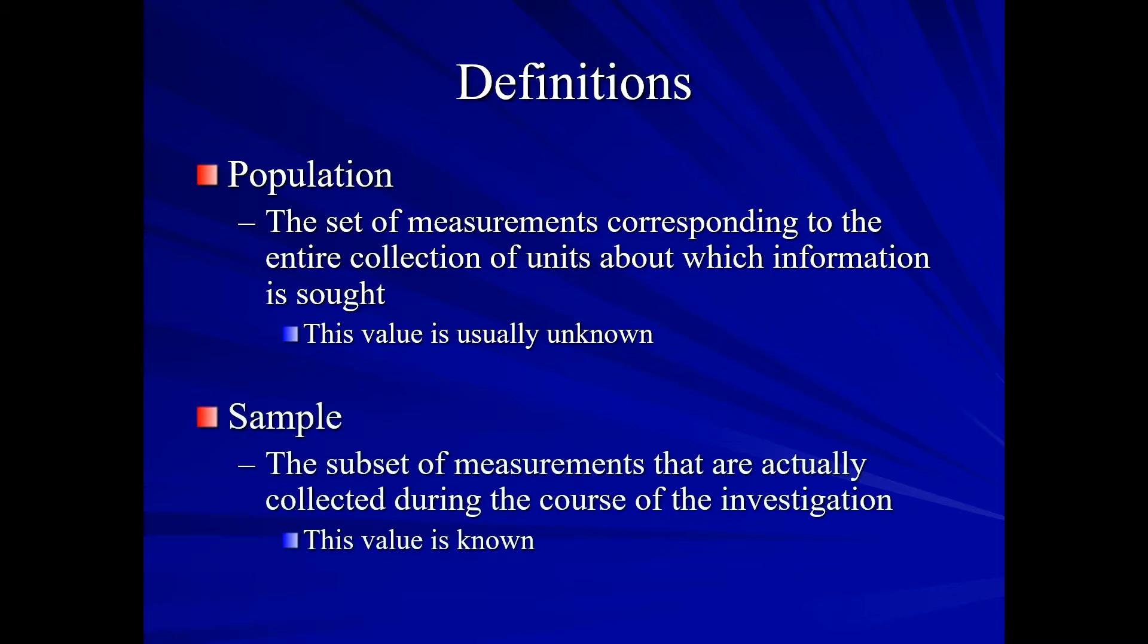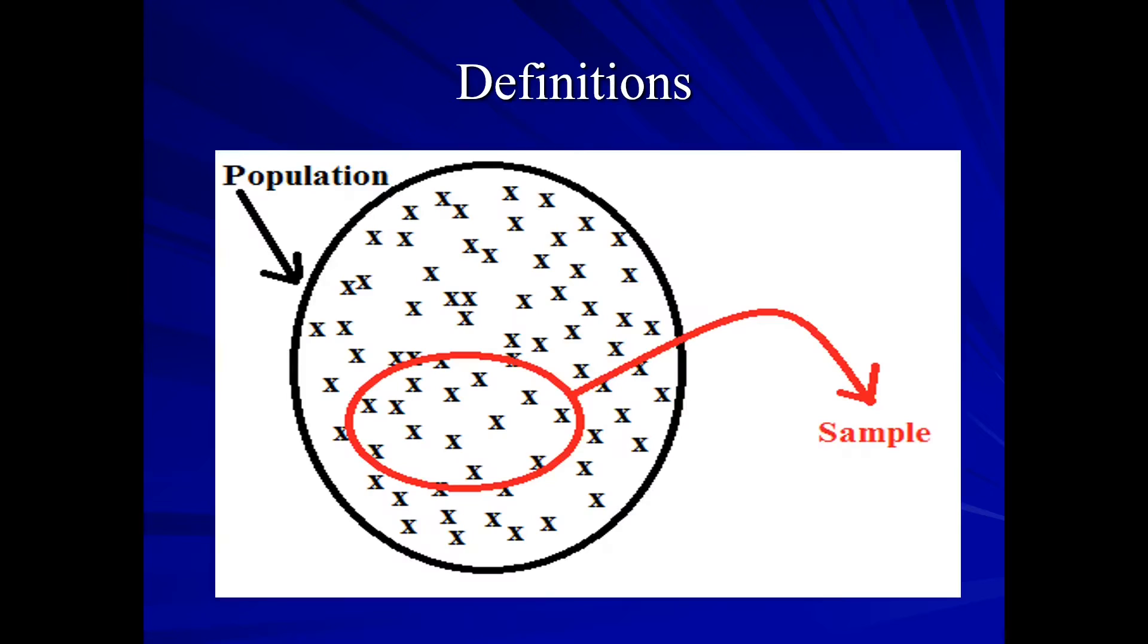And this is why we would take what's known as a sample. This is the subset of measurements that are actually collected during the course of the investigation, and this value is known because we can set this value. Perhaps we're looking at the mean age of all college students at a particular university. And so, we take a sample of, say, 500 students and we collect their ages. Now, we know this sample value, whereas we may not know the population value. So, here's a general idea of what we mean. If we consider this large circle, our population, we can see that the items that are circled in red are just our subset, our sample of our population.